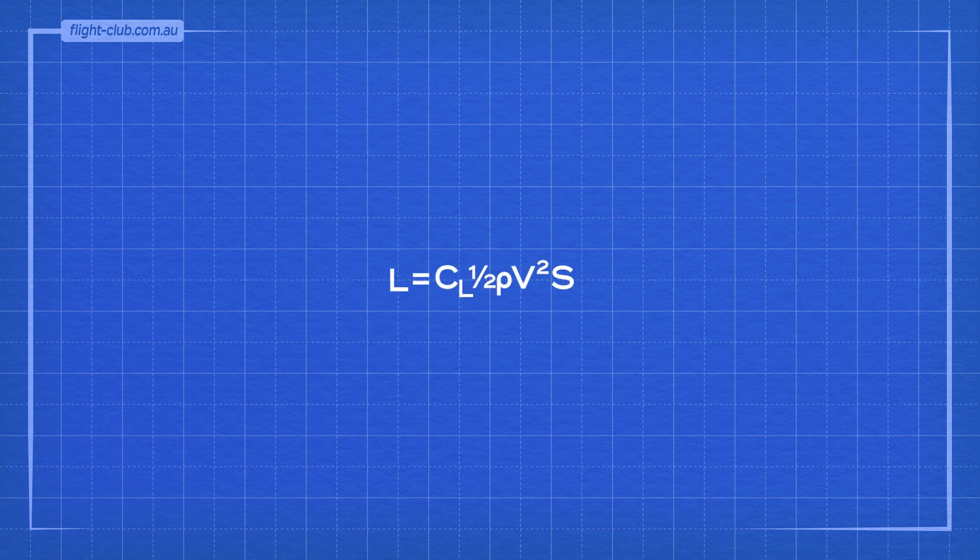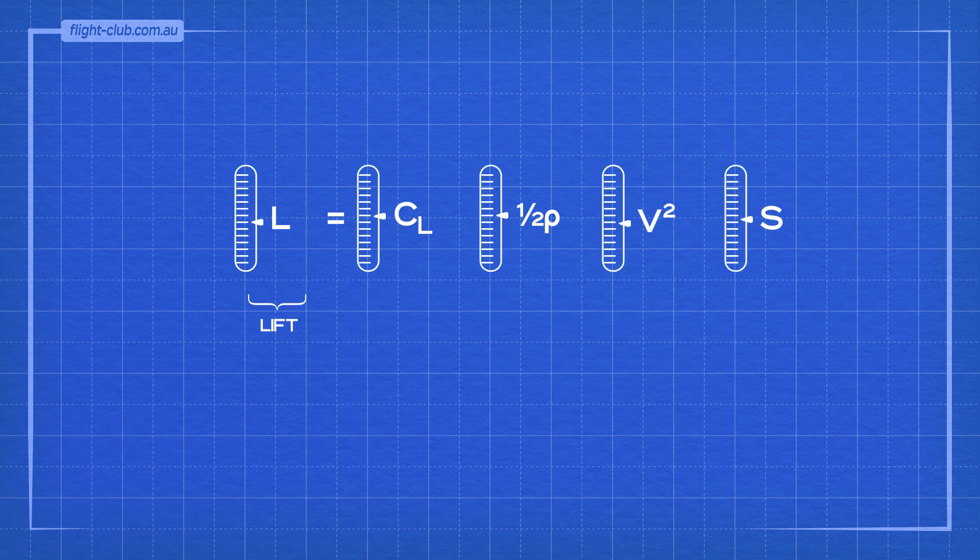This is the formula for lift. Let's break it down into individual elements. CL is the coefficient of lift, which represents the wing's ability to generate lift.